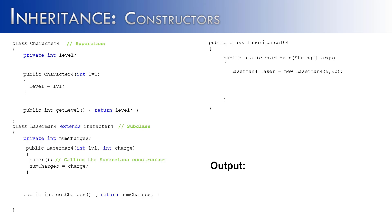So therefore now we take in both the level and the charge. We know that the level is not going to stay inside of the Laserman4 class — we want it to be sent up to the superclass. Wouldn't it be nice if we had something that calls the superclass's constructor? Well, we do have something: it's the call super(). How do you think we could utilize it to send the information up? It's just as easy as putting in the data — we're adding level to our call to the superclass. Now that information gets to character4, and we can change the information inside of character4, specifically the level of a character.